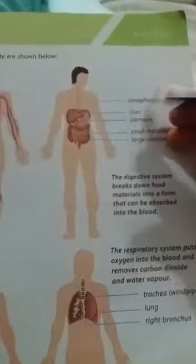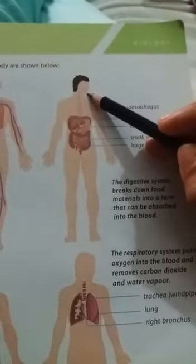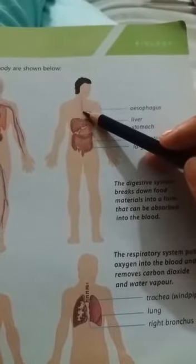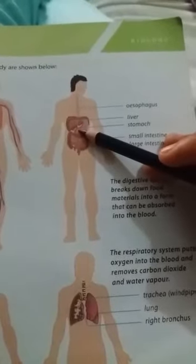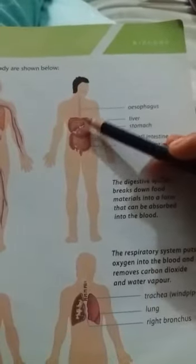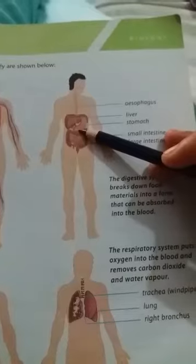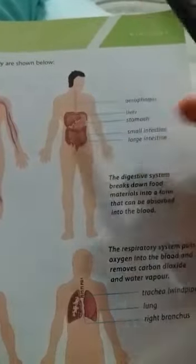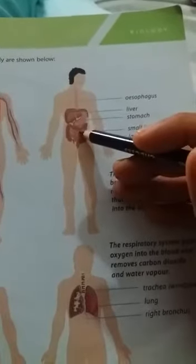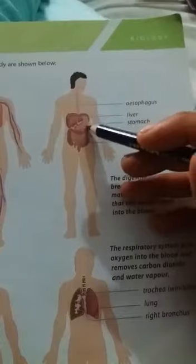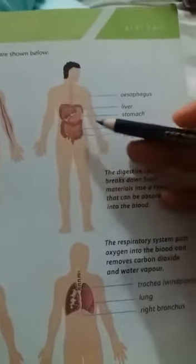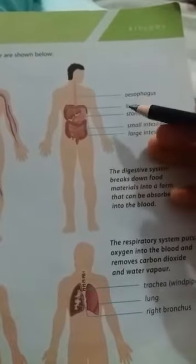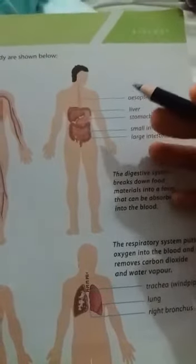When you eat food, it goes through your mouth and into your stomach. In the stomach, digestive juices break down the food. The nutrients are then absorbed into your blood, and whatever waste remains passes through your body via the excretory system.